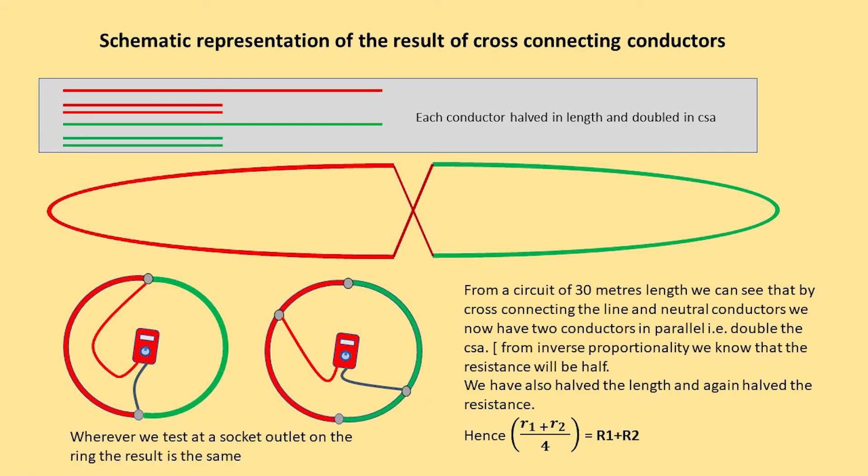This is a schematic representation of the result of cross-connecting conductors. From a circuit of 30 meters length, we can see that by cross-connecting the line and neutral conductors, we now have two conductors in parallel, doubling the CSA. From inverse proportionality, we know that the resistance will be half. We've also halved the length and again halved the resistance. Hence we end up with the formula: lowercase r1 plus lowercase r2 divided by 4 equals the R1+R2 of a circuit.